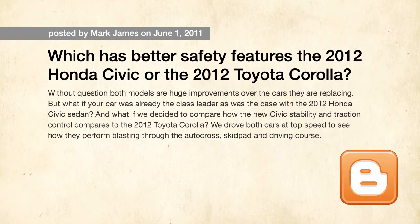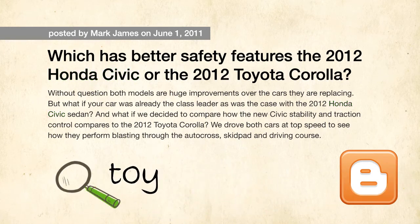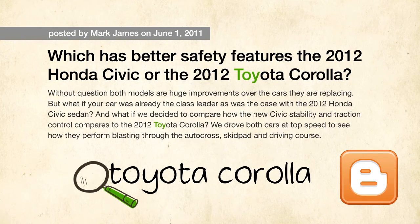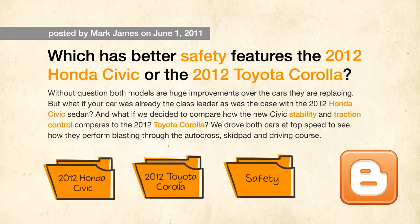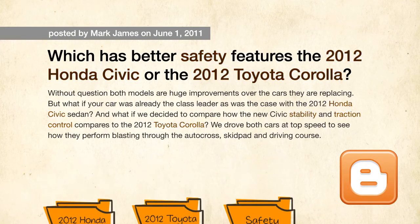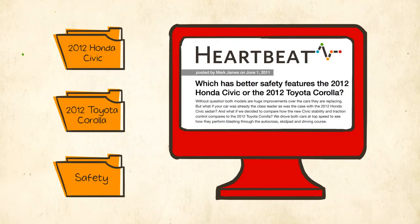Let's take a look at another example. Here's a snippet of a blog post: Which has better safety control, the 2012 Honda Civic or the 2012 Toyota Corolla? This matches both queries and all three tagging rules and will be stored in the database. This blog post will be viewable under all three tags as it matches all three tagging rules.